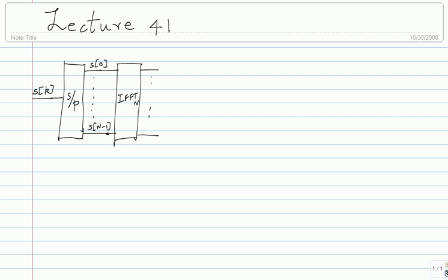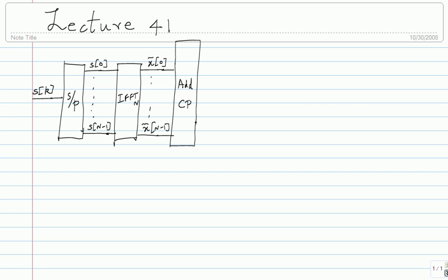The IFFT gives you a set of intermediate symbols — I'll call it X̃(0) to X̃(N-1). In order to deal with ISI, we came up with this suboptimal idea of converting linear convolution to circular convolution on a block. It's suboptimal, but it works.